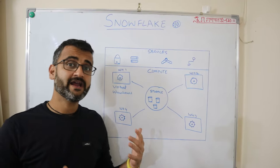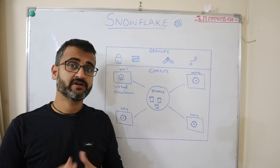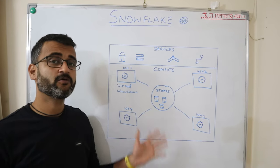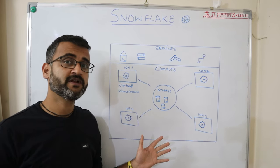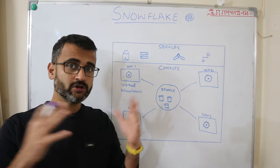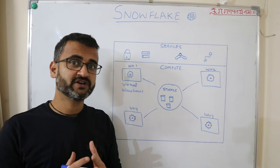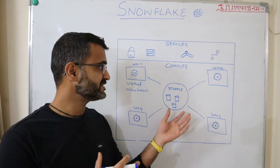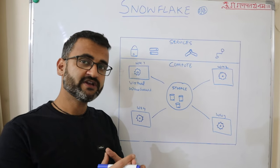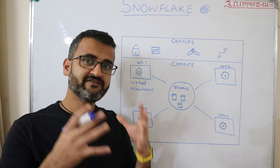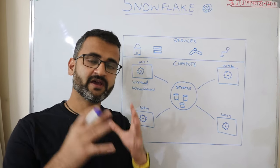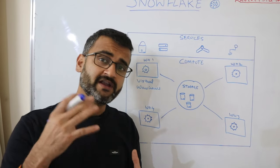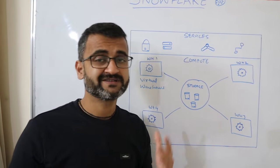This is the high-level architecture of Snowflake, and as you can see, there are three different components visible here. Let's understand how all three components work together. At the heart of the Snowflake architecture sits the storage — storage is your central area where all the tables and views will be stored.